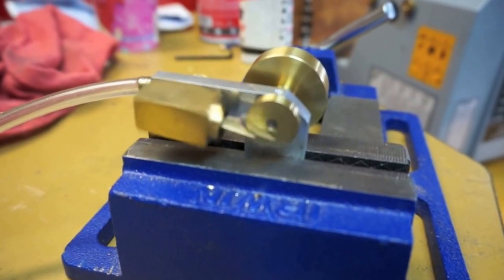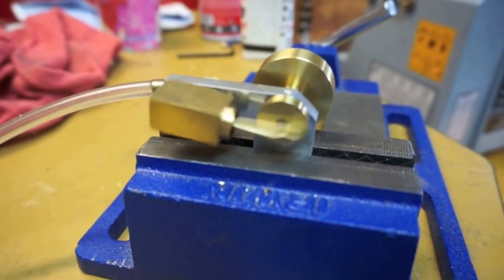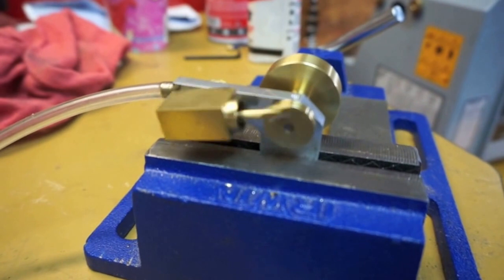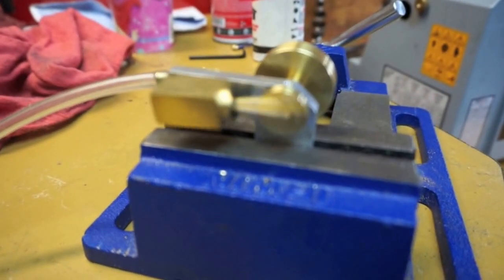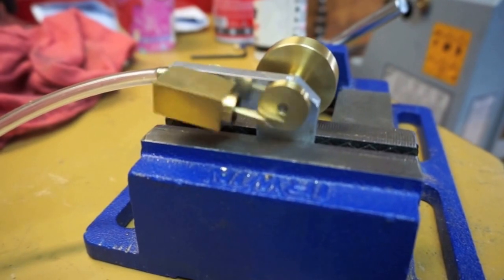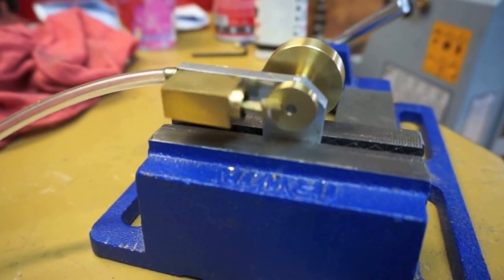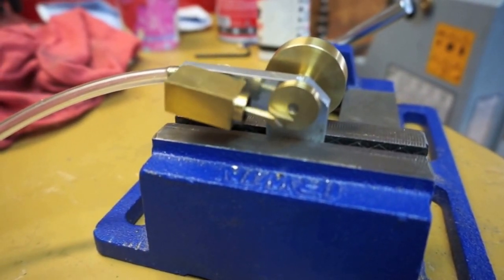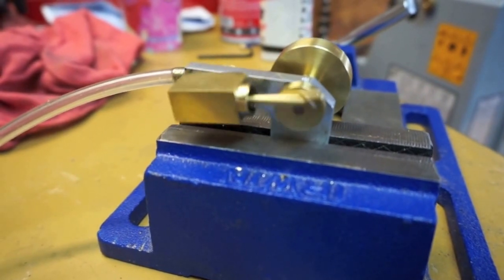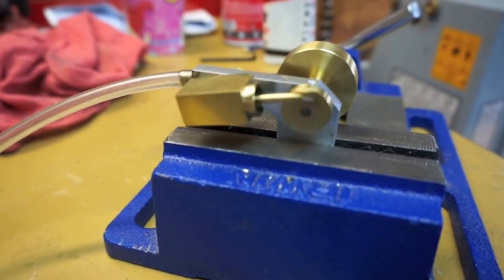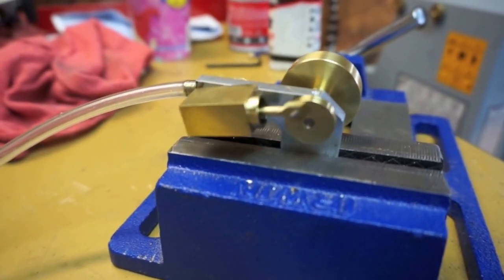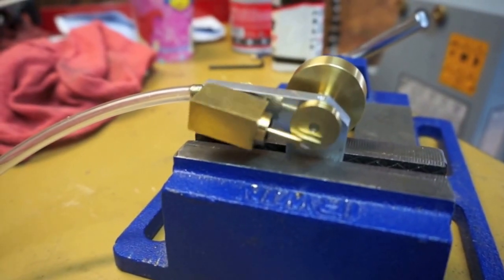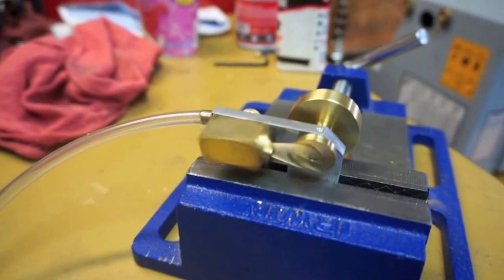And it's ticking away. Alright, so this is my Elmer's 25, Number 25, that's the plan. A wobbler steam engine, which is kind of a traditional first steam engine for folks building them from scratch.